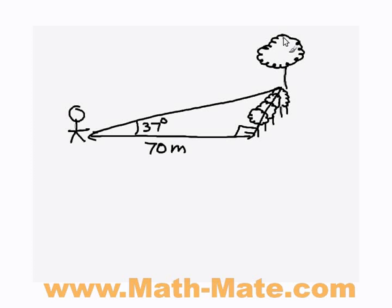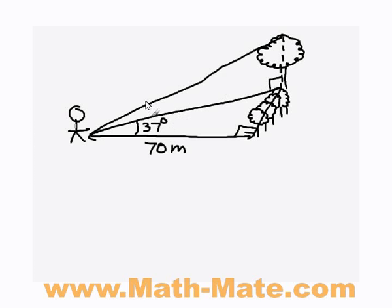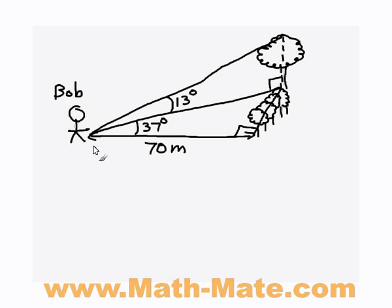You can always draw another triangle in this sort of situation which is in the vertical plane - one in the air. One side of that triangle is the height of the large tree, one side is along the ground, and one side is in the air. You've got an angle of elevation - in this case the angle is 13 degrees - and it also has a right angle. The person in the question is called Bob.